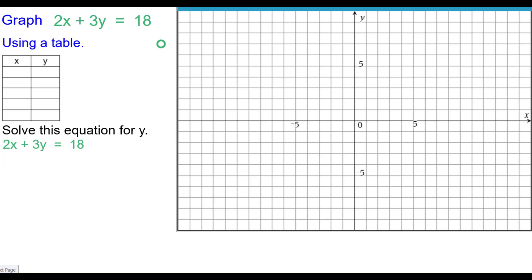So solving for Y, first we need to do is subtract 2X from each side, divide each term by 3, and now it is solved for Y. We should point out the original equation and the one solved for Y are called equivalent equations. They look different, but they have the same ordered pairs.